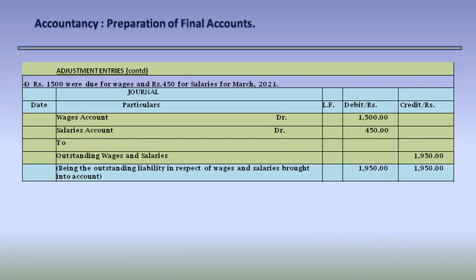Adjustment entry 4: Rs. 1,500 were due for wages and Rs. 450 for salaries for March 2021. We pass the adjustment entry: Wages Account Dr. 1,500 and Salaries Account Dr. 450 to Outstanding Wages and Salaries 1,950.